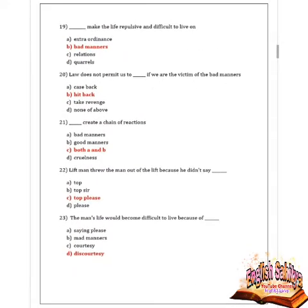Next question: what makes life repulsive and difficult to live on? Options are extra-ordinariness, bad manners, relations, and quarrels. Option B is correct — bad manners make the life repulsive and difficult to live on. Next question: law does not permit us to do what if we are victims of bad manners? Options are case back, hit back, take revenge, none of the above. Option B is correct — hit back.